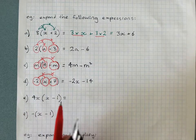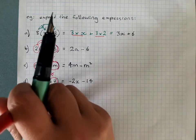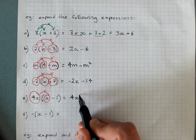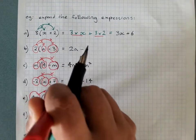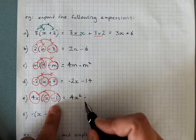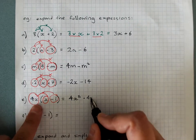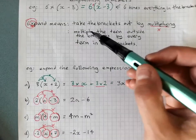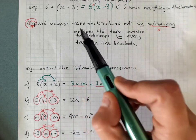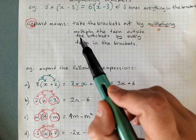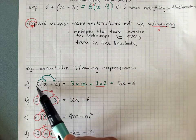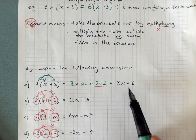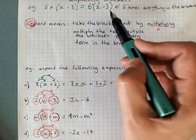4x outside of x take away 1. Draw your arrow and multiply: 4x times x is 4x squared. Then 4x times negative 1 — positive times a negative is negative — 4 times 1 gives 4x, so minus 4x. Remember, x squared and x are different, we can't take that any further. When it says expand the expressions, it means take the brackets out by multiplying. Multiply the term outside by both terms inside to get the expanded answer without brackets.